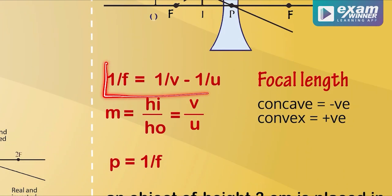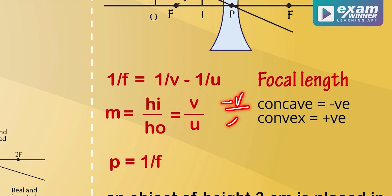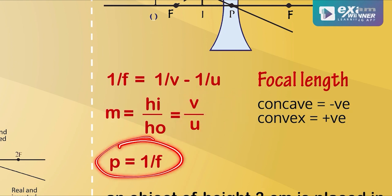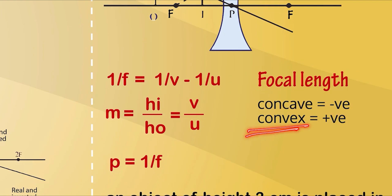The lens equation is: 1 by F is equal to 1 by V minus 1 by U. The magnification equation is equal to V by U. The power of a lens is 1 by focal length. For a convex lens the focal length is positive, and for a concave lens the focal length is negative.